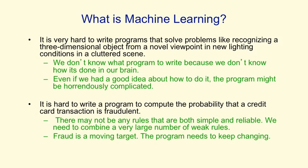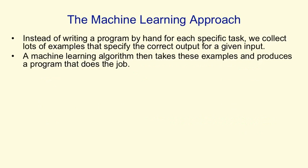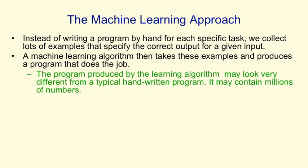The machine learning approach is to say: instead of writing each program by hand for each specific task, for a particular task we'll collect a lot of examples that specify the correct output for a given input. A machine learning algorithm then takes these examples and produces a program that does the job. The program produced may look very different from a typical hand-written program — for example, it might contain millions of numbers about how you weight different kinds of evidence. If we do it right, the program should work for new cases as well as the ones it's trained on.